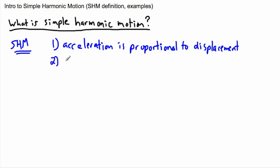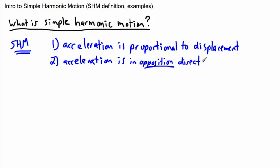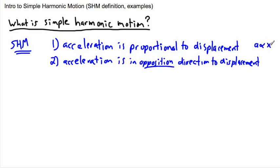The second condition is that the acceleration is in the opposite direction to the displacement. So we can say that acceleration is proportional to X, your displacement, and it's proportional to the negative — meaning opposite in direction. We're going to look at those in more detail later.